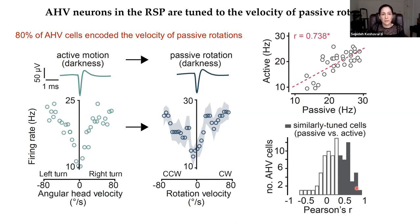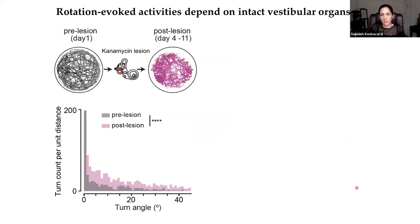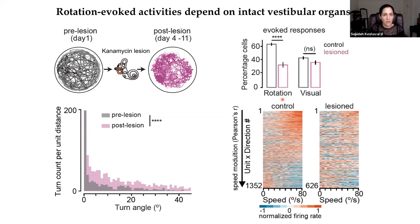We further confirmed whether these rotation-evoked activities are actually dependent on the vestibular organ by a targeted injection of kanamycin, which lesions the posterior and horizontal vestibular canals — the semicircular canals. We can confirm these lesions by the increase in turning behavior, which is also quantified. We saw a significant drop in both rotation-evoked responses, all recorded in the dark, and also in speed modulation as shown in the heat maps in the lesioned animals. In comparison, visual-only responses were not affected by these lesions.